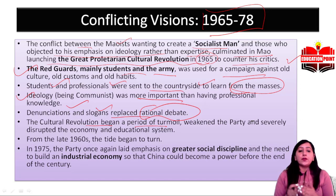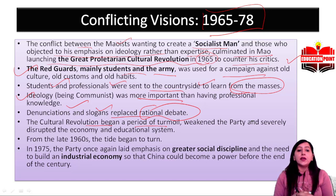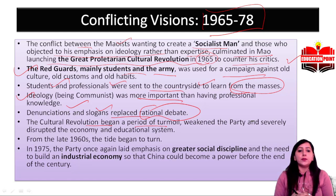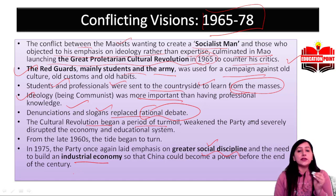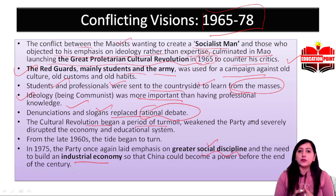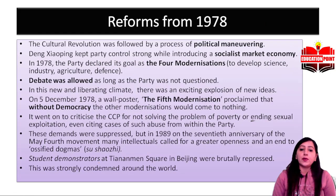From the late 1960s, the tide began to turn. By 1975, the party's ideology changed again — the party started to focus on greater social discipline and the need to build an industrial economy, so that China could become a power before the end of the century.